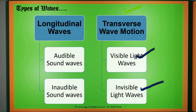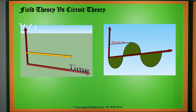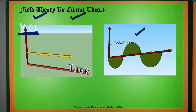Before going further, let us understand the meaning of electromagnetic field and the problems associated with studying it. In electronics, electrical engineering, or physics, there are two types of theories: field theory and circuit theory. Circuit theory is simple — it deals only with parameters related to voltage and current levels, including alternating current, which changes with respect to time, and direct current, which is constant with respect to time.